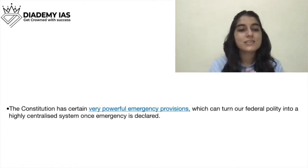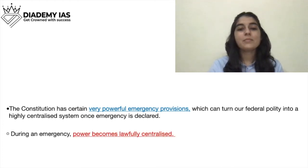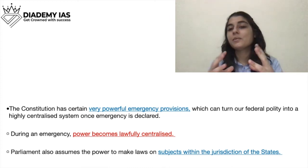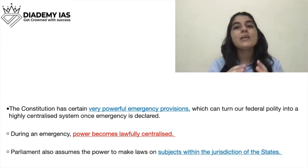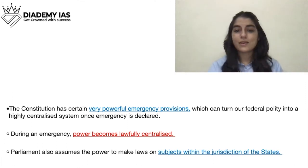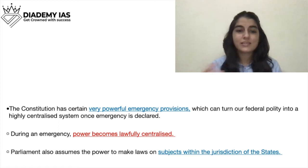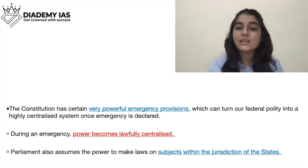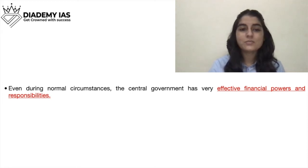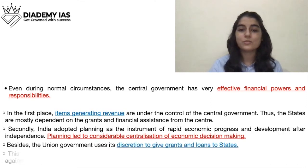The second provision is that the constitution has certain very powerful emergency provisions. For example, in the event of war, an emergency situation arises, and at such times the power to control the situation goes to the central government. This means we get converted from a federal country into a unitary country during emergencies - the powers of the states shift to the central government. These emergency provisions can turn our federal polity into a highly centralized system once emergency is declared.